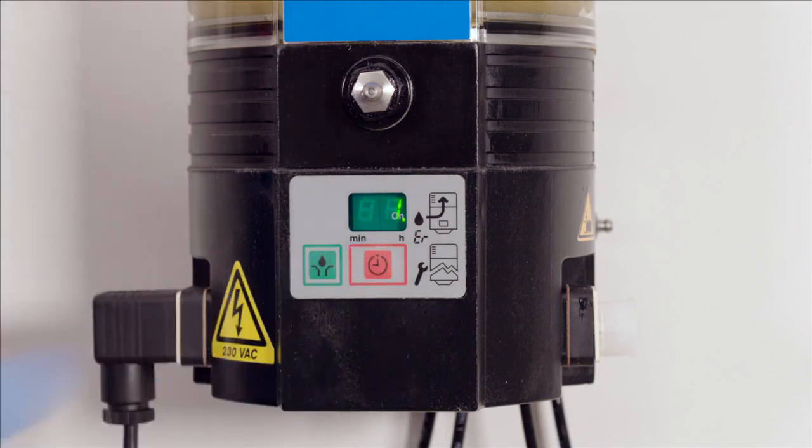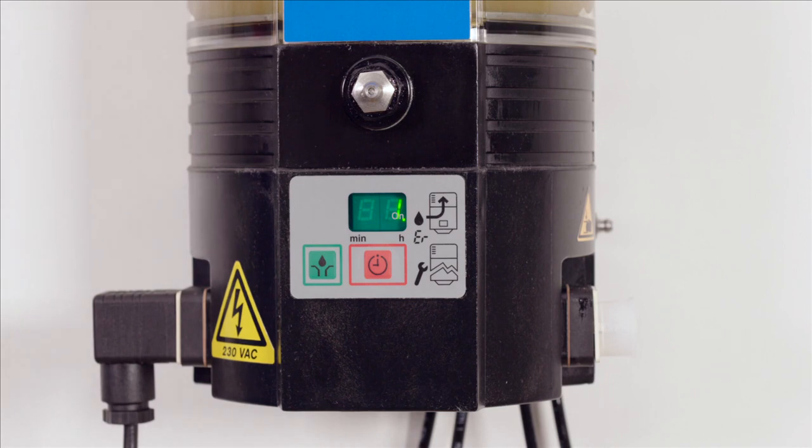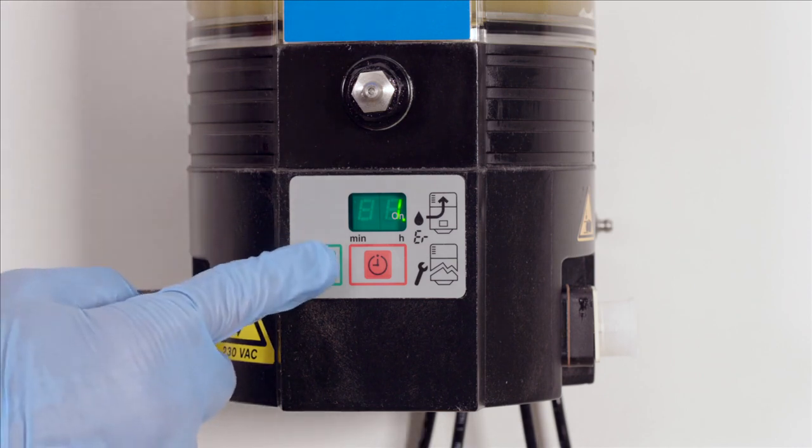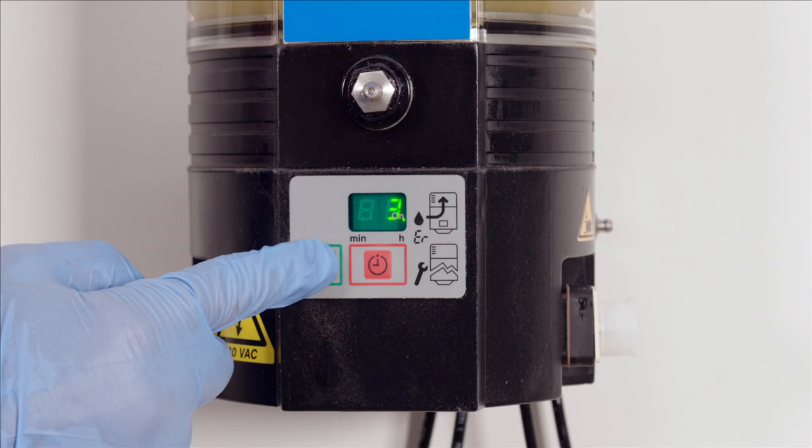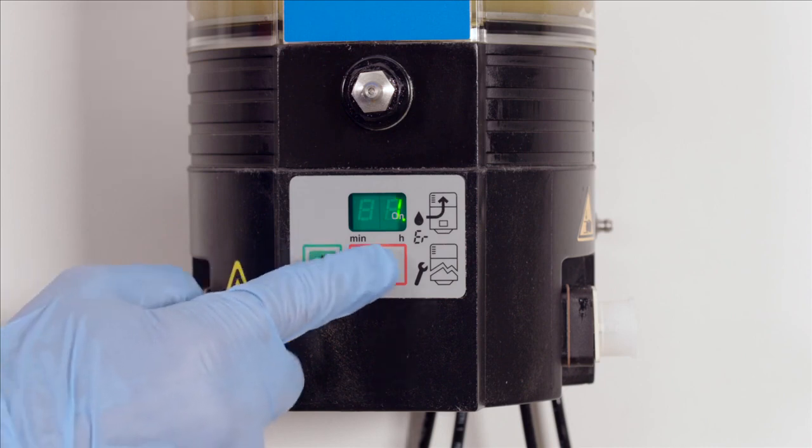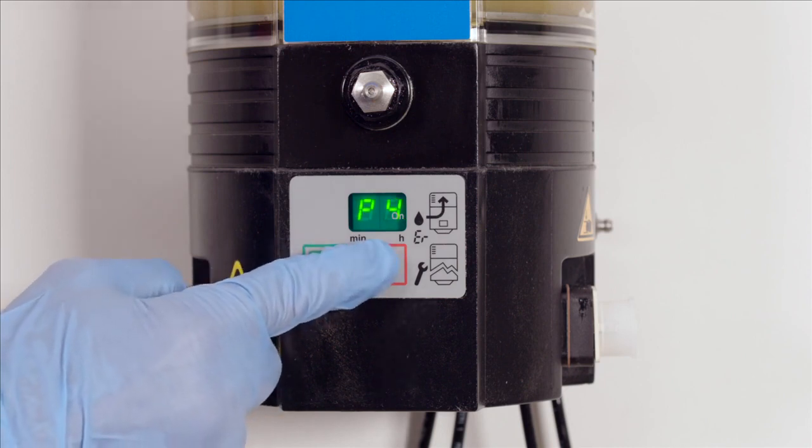P3 sets the number of cycles between two pauses. This setting is available for the TLMP1008 exclusively. For the TLMP1018, it is set to 1 and cannot be modified. As previously, use the green key to select the right value. On completion, press the red key again. P4 is now displayed.